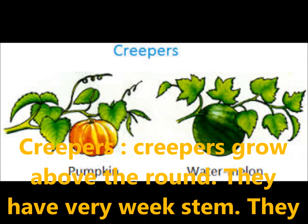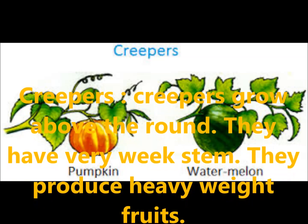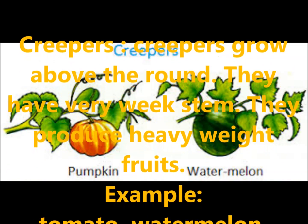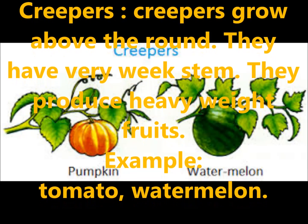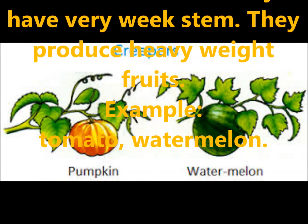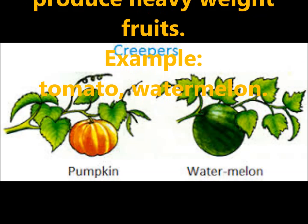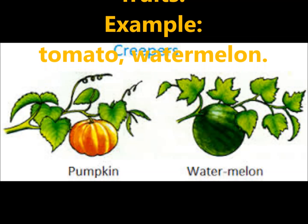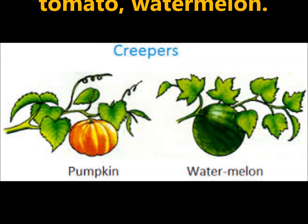Creepers grow above the ground. They have a very weak stem and they produce heavy weight fruit. Because of this the stem becomes very weak and creepers are unable to stand or climb to grow up. Examples: tomato and watermelon.